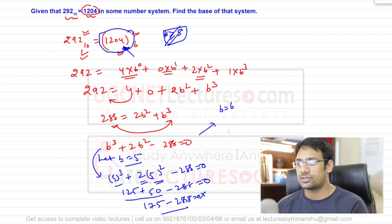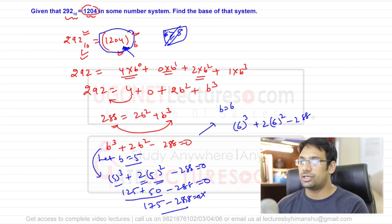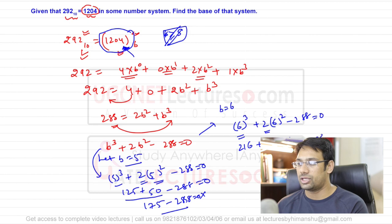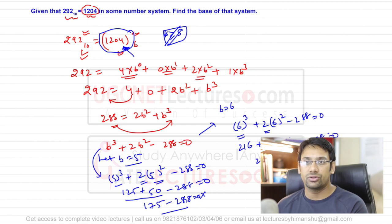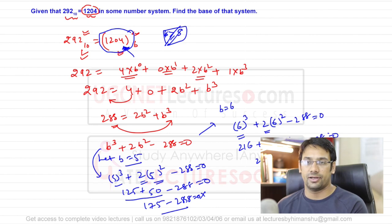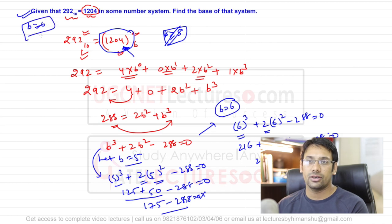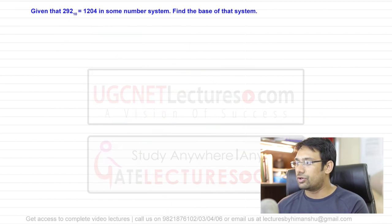Try b = 6: 6³ + 2×6² − 288 = 216 + 72 − 288 = 288 − 288 = 0. This is valid! Therefore the base of this number system is b = 6.